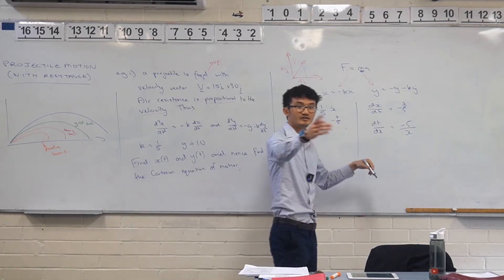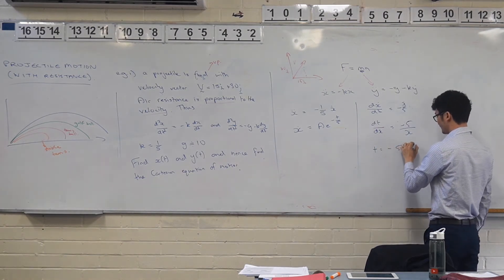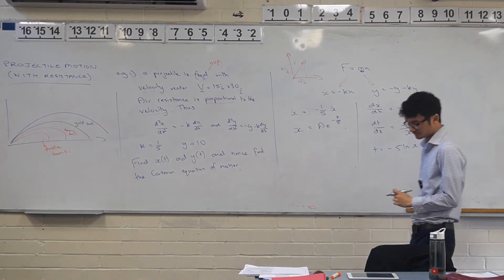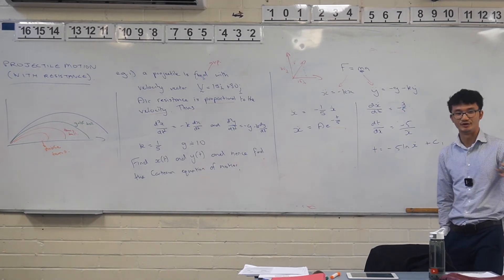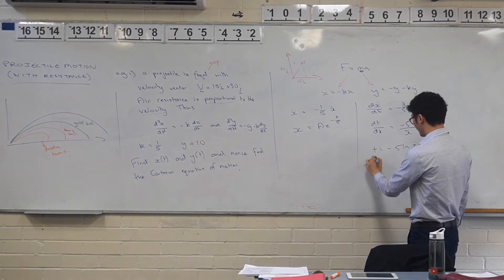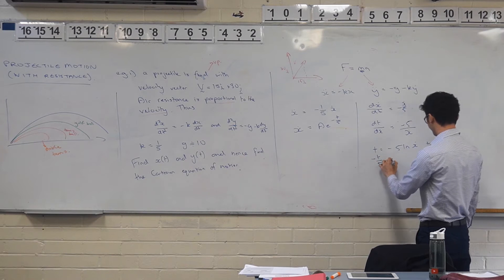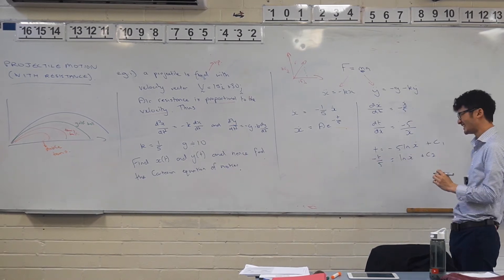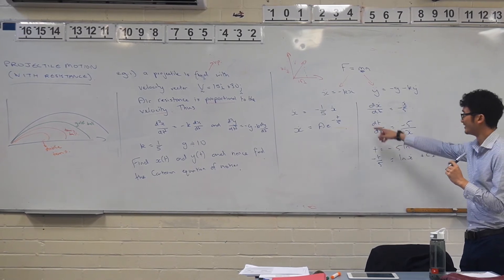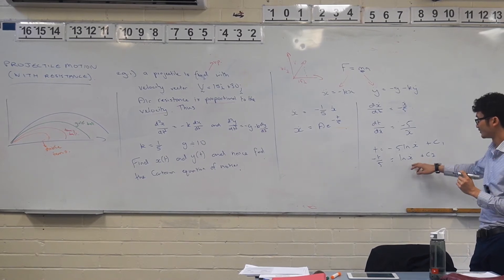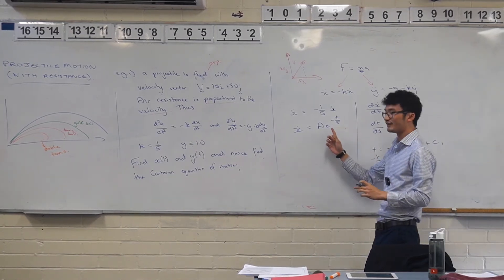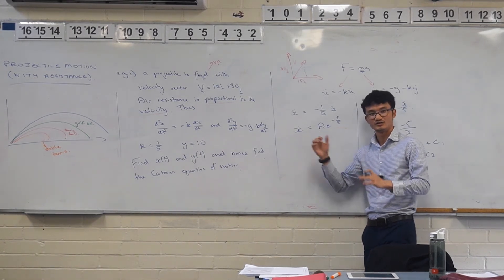I said that this is the derivative of this. So I could write this as dx dot dt equals negative 1 on 5 x dot. But we know we can't integrate this straight up. Why not? Because we don't have this in respect to t. So what do we have to do? We have to take the reciprocal. So we're getting negative 5 over x dot dx dot equals dt.